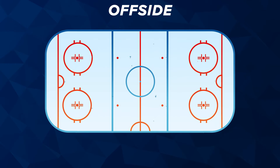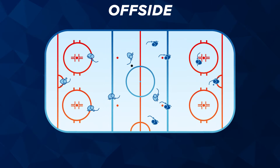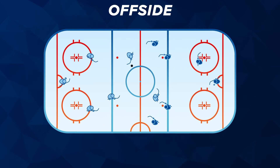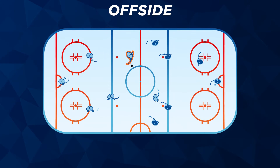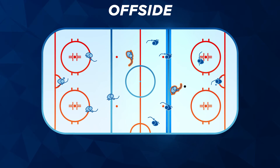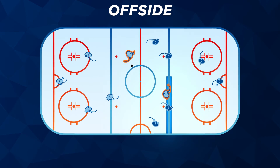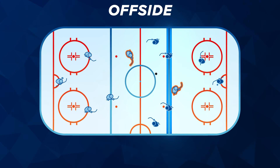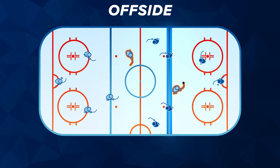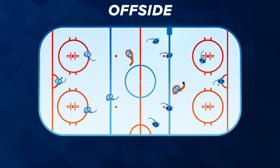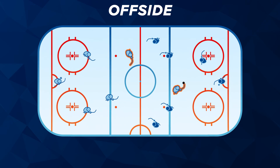Offside: this is one of the most confusing rules for non-hockey fans. Basically, it means that if team A has possession, the puck must cross the blue line into team B's zone before the attacking players do. If a player from team A enters the zone before the puck, then team A is offside. There are other nuances to offside, but that is the simplest definition.